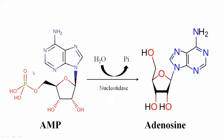In AMP, there is dephosphorylation of the phosphate group with the help of the enzyme nucleotidase. Nucleotidase, with the help of a water molecule, removes this phosphate, causing dephosphorylation of adenosine monophosphate into adenosine. The phosphate is removed and adenosine remains — adenosine being the adenine base together with the ribose sugar.